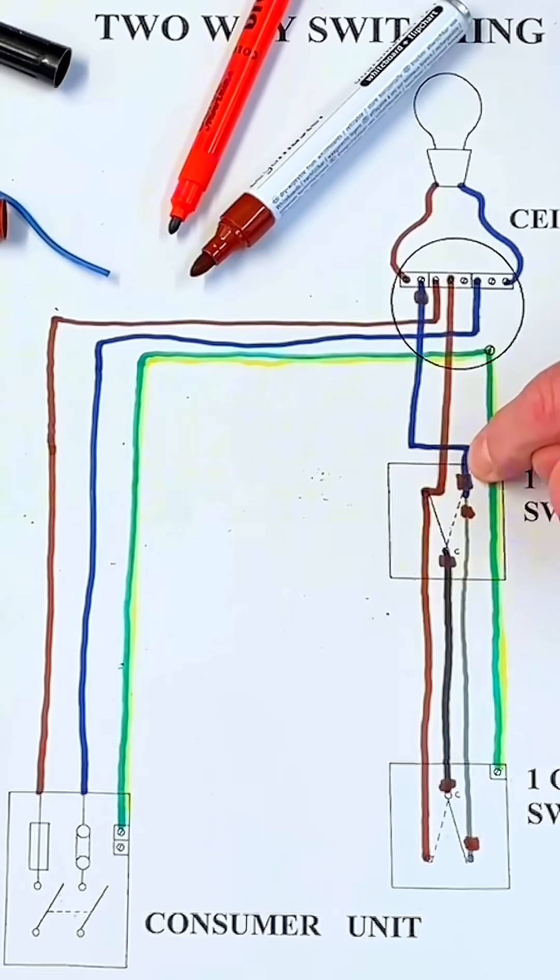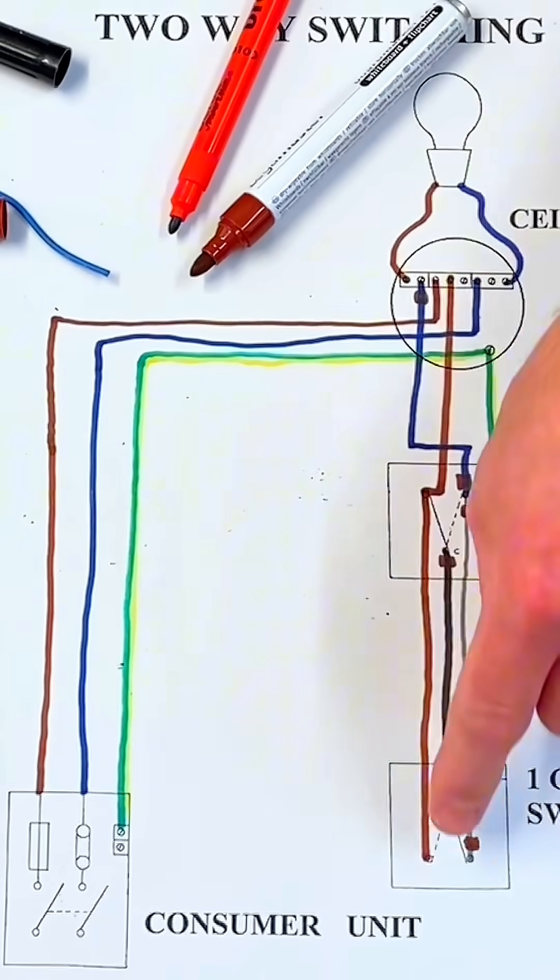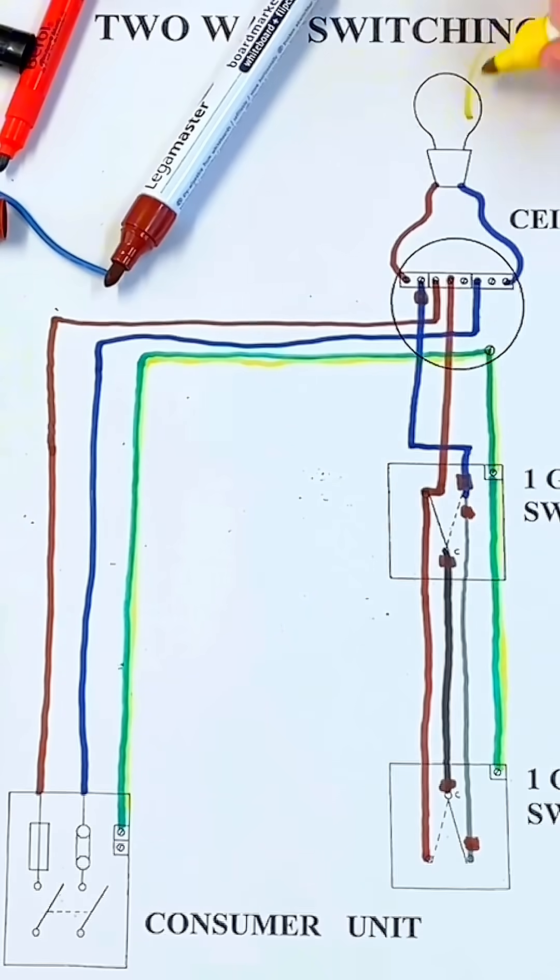Yes, in that position there with the two blades as they are now, this lamp would illuminate. This would be illuminated at that stage. How do I turn it off?